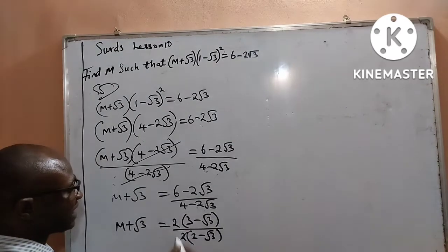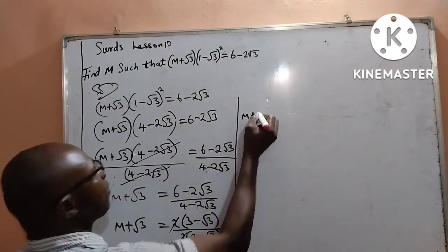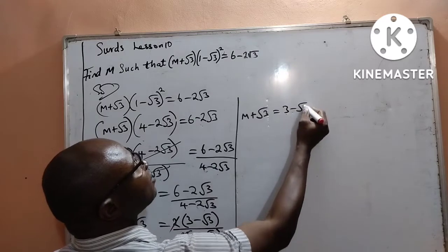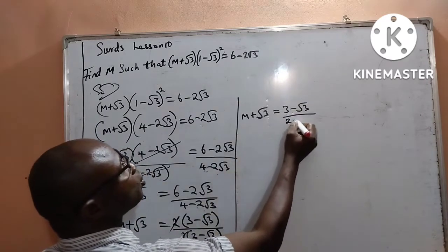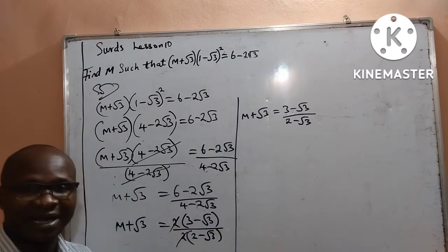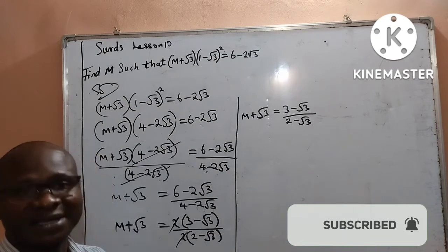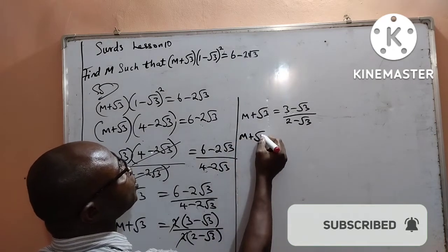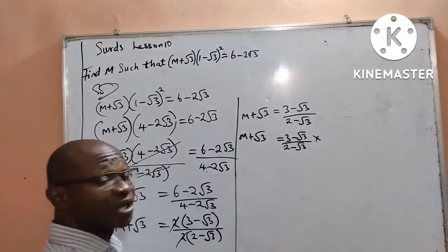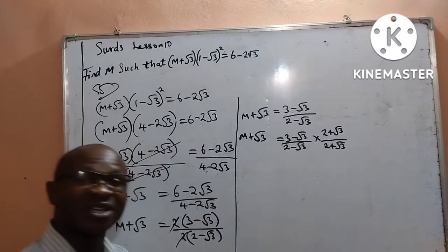By the right-hand side, I cancel out 2, which is common at both the numerator and denominator. So what remains is m plus root 3 by the left-hand side, and by the right-hand side, I have 3 minus root 3 all over 2 minus root 3. The next thing I will do is to rationalize the right-hand side. So m plus root 3 is equal to 3 minus root 3 all over 2 minus root 3, and I will now rationalize it.